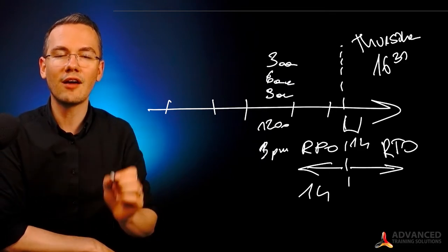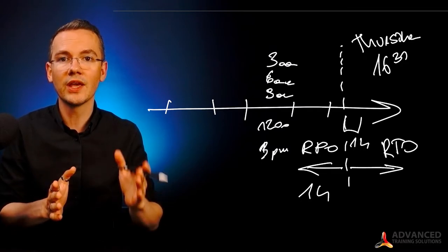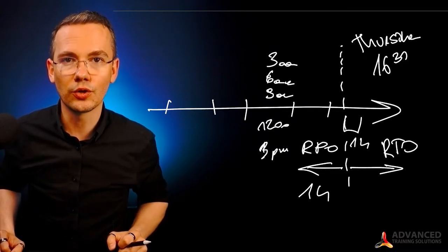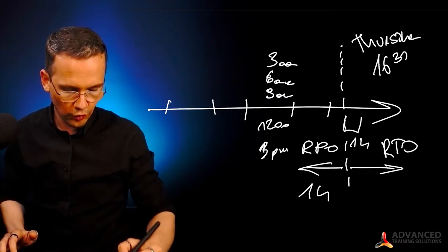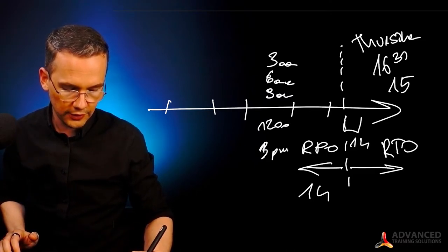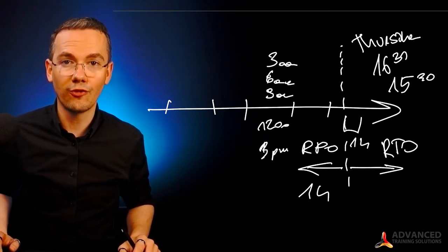it means that I cannot afford to lose more than one hour worth of data from the moment this failure occurred. So I can lose all of the data from between 3:30, half past three, to 4:30, half past four, and that's it.